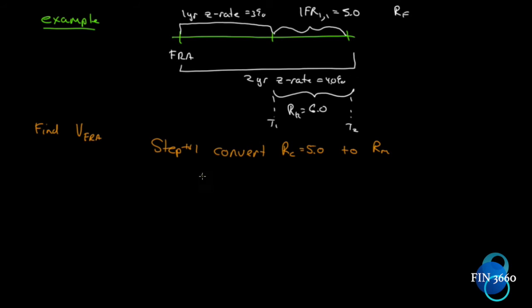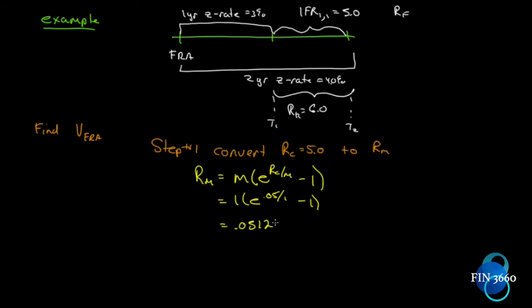The formula is: RM equals M times (e to the RC over M, minus one). We calculated this earlier in the chapter. Here we're converting from continuous compounding to an annual compound rate, so M equals one. RM equals one times (e to the 0.05 divided by one, minus one), which equals 0.05127. So the rate we must use is 5.127 percent.